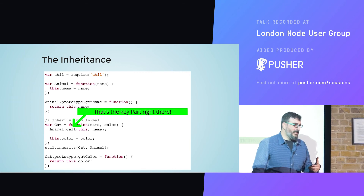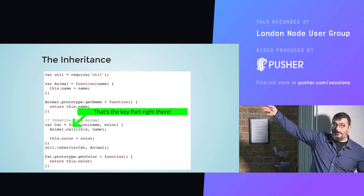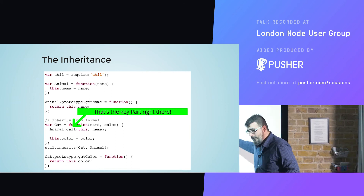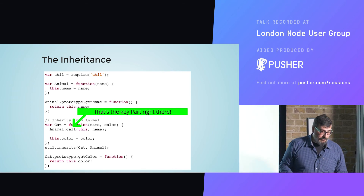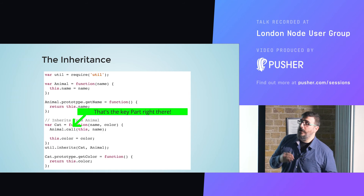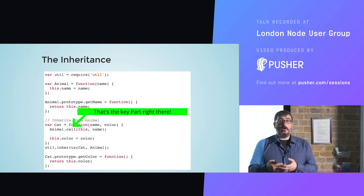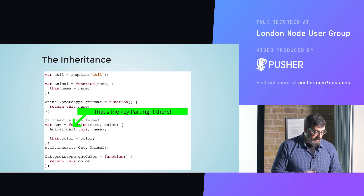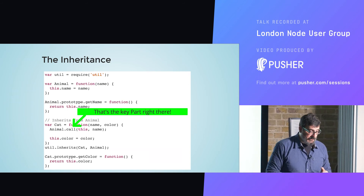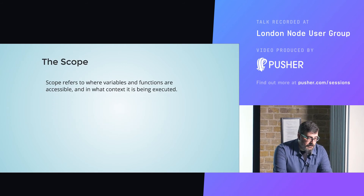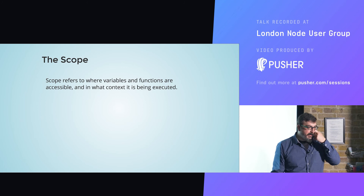What we want to do is, on the child constructor, invoke the parent constructor so that we ensure the entire inheritance chain is invoked with the same scope or context. That is what ensures every constructor in the inheritance chain is called with the same context, enabling proper handling of prototypical inheritance. Scope refers to where variables and functions are accessible and in what context they are being executed.